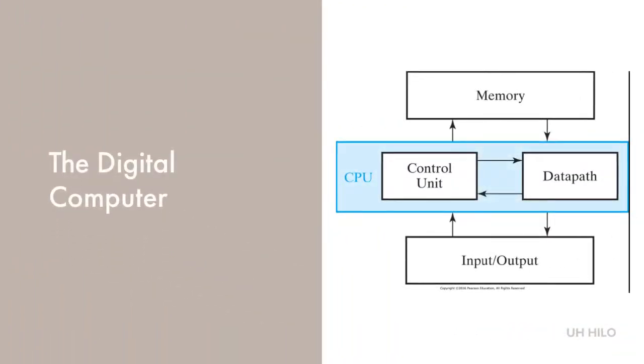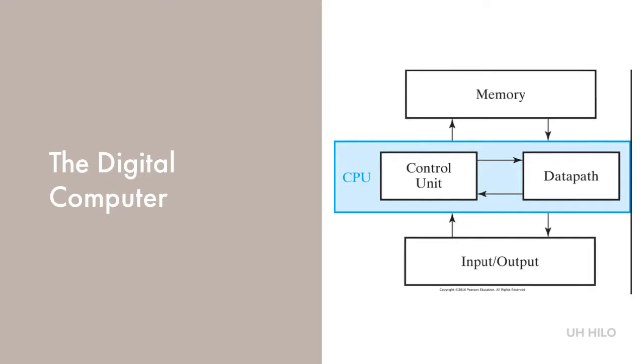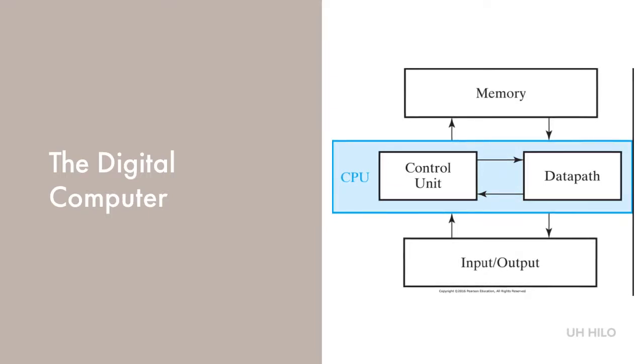This is a simple block diagram of a digital computer. Memory stores programs as well as input and output. The data path is known as the arithmetic logic unit in classic von Neumann architecture and performs the data processing applications. The control unit supervises the flow of information between the various units, retrieves instructions, and executes them.